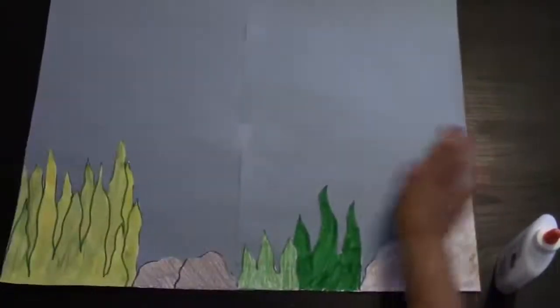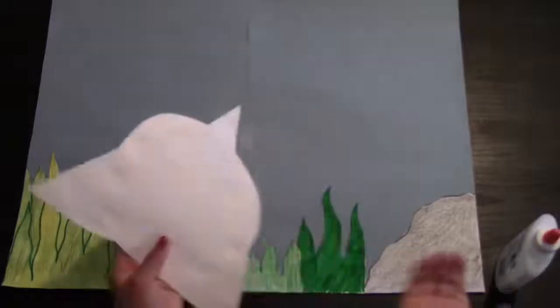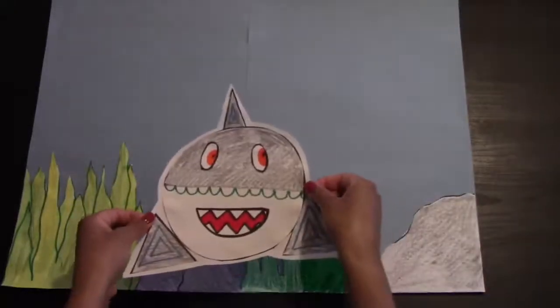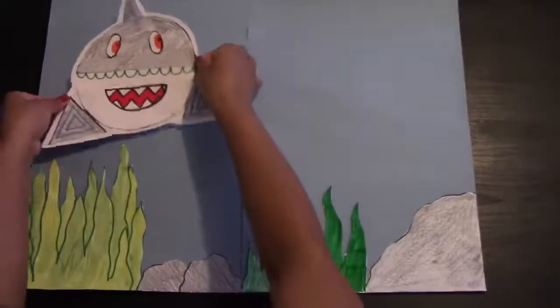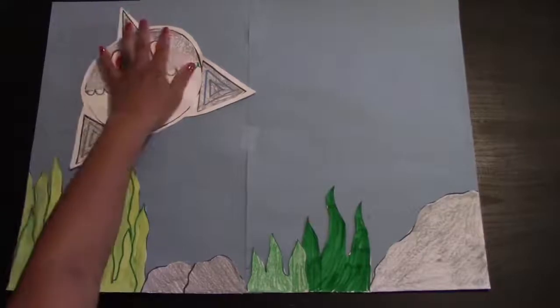Now, you're going to take your background that you worked on yesterday and pick a place for your shark. It can be up high, it can be down low, it does not matter. When you pick your spot, take your glue and go ahead and glue him on. And there you go.